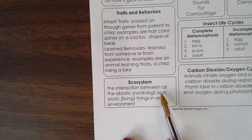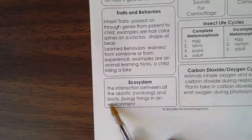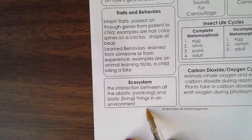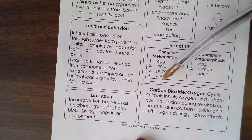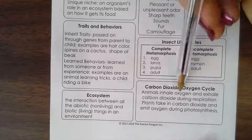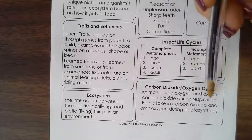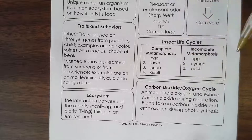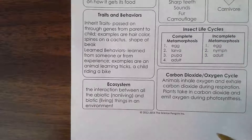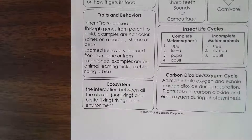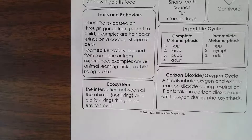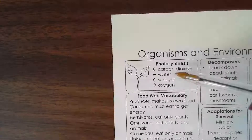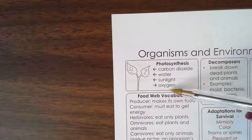Ecosystem: that's the interaction between all the abiotic (non-living) and biotic (living) things in an environment. And last, our carbon dioxide-oxygen cycle: animals inhale oxygen and exhale carbon dioxide during respiration. Plants take in carbon dioxide and emit oxygen during photosynthesis. So: I breathe in oxygen, I breathe out carbon dioxide, the tree breathes in my carbon dioxide, and because of the water and sunlight, it gives me back my oxygen.